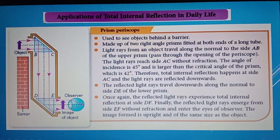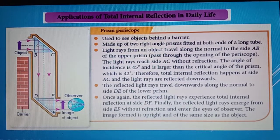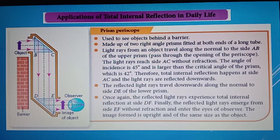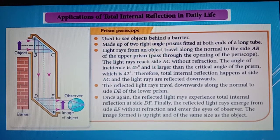Now for applications — we can discuss the prism periscope. We could use a mirror periscope, but if we use a mirror it only produces ordinary reflection, and a mirror absorbs quite a large amount of light energy, producing a very blurry image. The advantage of using a prism is that it produces total internal reflection, meaning nearly all of the light ray is reflected, so the intensity of light causes a brighter image to form.